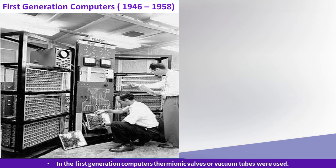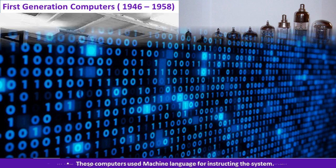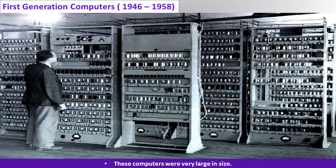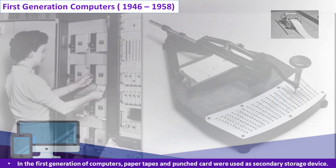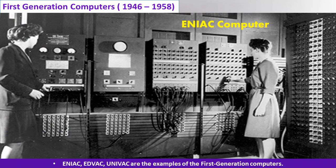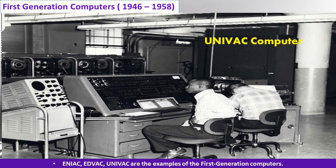First generation computers, 1946 to 1958. In the first generation computers, thermionic valves or vacuum tubes were used. These computers used machine language for instructing the system. These computers were very large in size, very expensive but slow and often undependable. Paper tapes and punched cards were used as secondary storage devices. ENIAC (Electronic Numerical Integrator and Computer), EDVAC (Electronic Discrete Variable Automatic Computer), and UNIVAC (Universal Automatic Computer) are examples of the first generation computers.